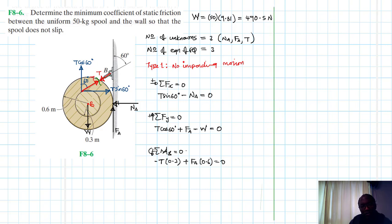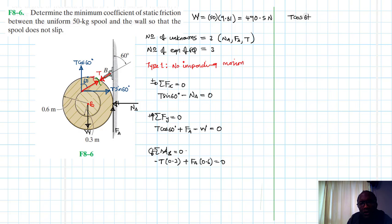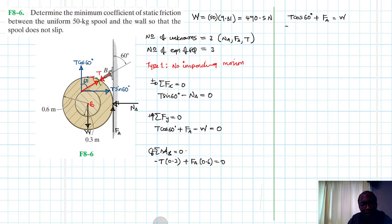Solving these equations simultaneously: from the moment equation, multiplying the y-equation by 0.6 and eliminating FA, we get T cos 60 times 0.6 plus 0.3 T equals 0.6 W. Therefore T equals 0.6 times 490.5 divided by (0.6 cos 60 plus 0.3).